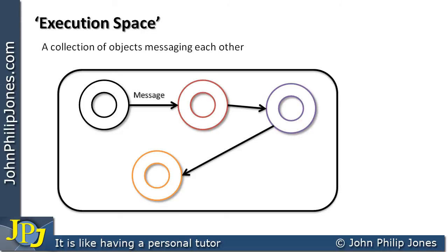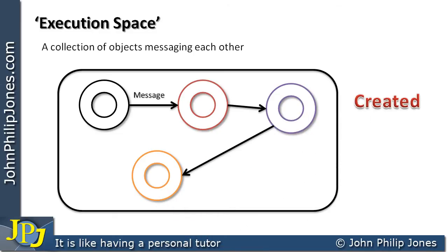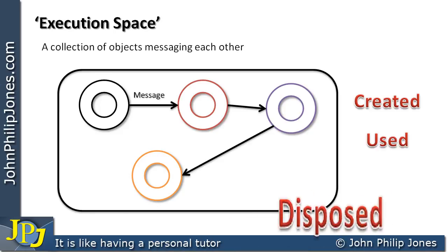So what we can say about object-oriented programs is: objects are created, objects are then used — meaning they send messages to one another — and there are essentially two types of messages: one saying do this to yourself, and another saying here's some data, send me the results of the processing back. And we've also seen that when objects are no longer needed, they are disposed of.